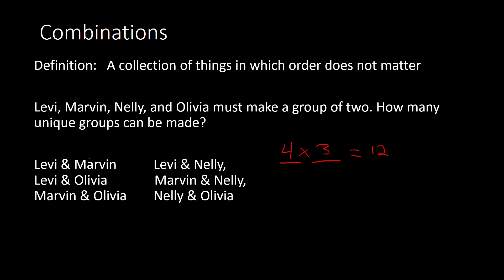Now we have to take into account the fact that the order does not matter — meaning I could pick Marvin and Levi, or Levi and Marvin; it does not matter the order. So I divide out the repeats. If we're picking two people at a time, the ways we can arrange those two people would be two factorial. So I divide by two factorial, or two, which gives me twelve over two, and my solution would be six.